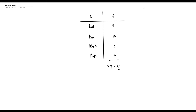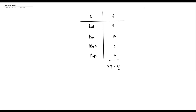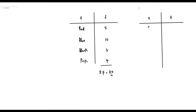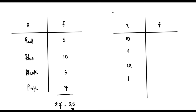Now let's talk about the frequency distribution where the variable of interest is a numerical variable. I'll use age. In this same class, I decide to get the age of the students. The minimum age is ten years and the maximum age is fourteen years. So our variable of interest x takes the values ten, eleven, twelve, thirteen, and fourteen.